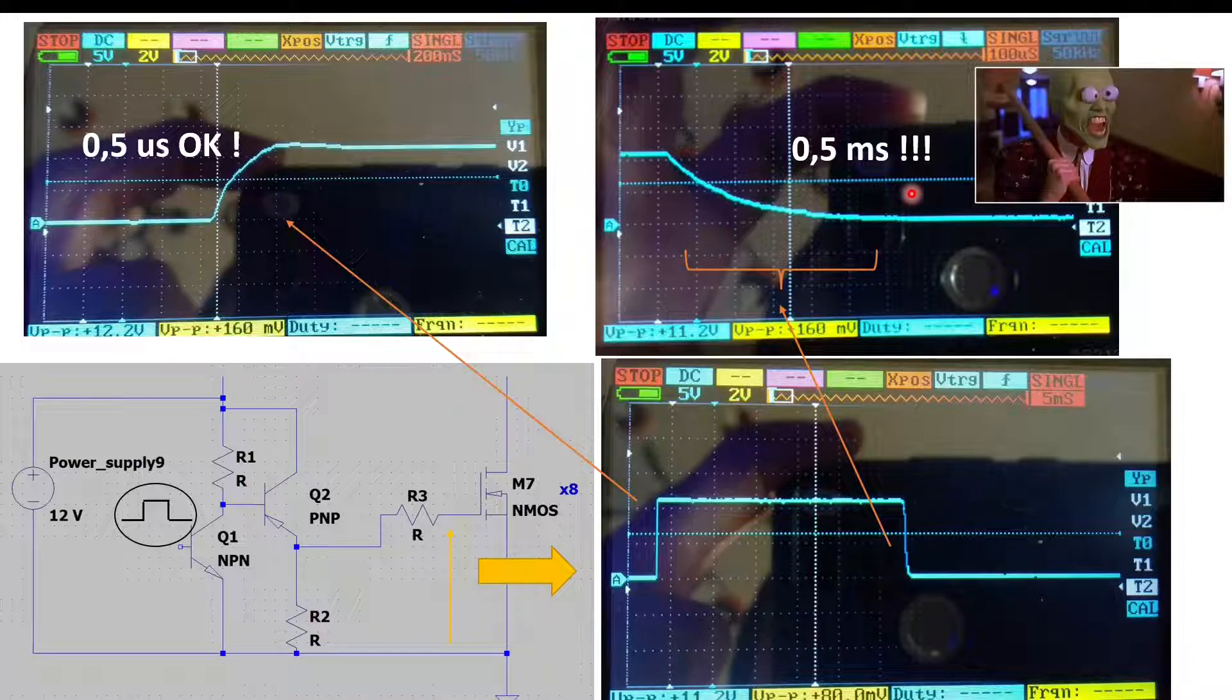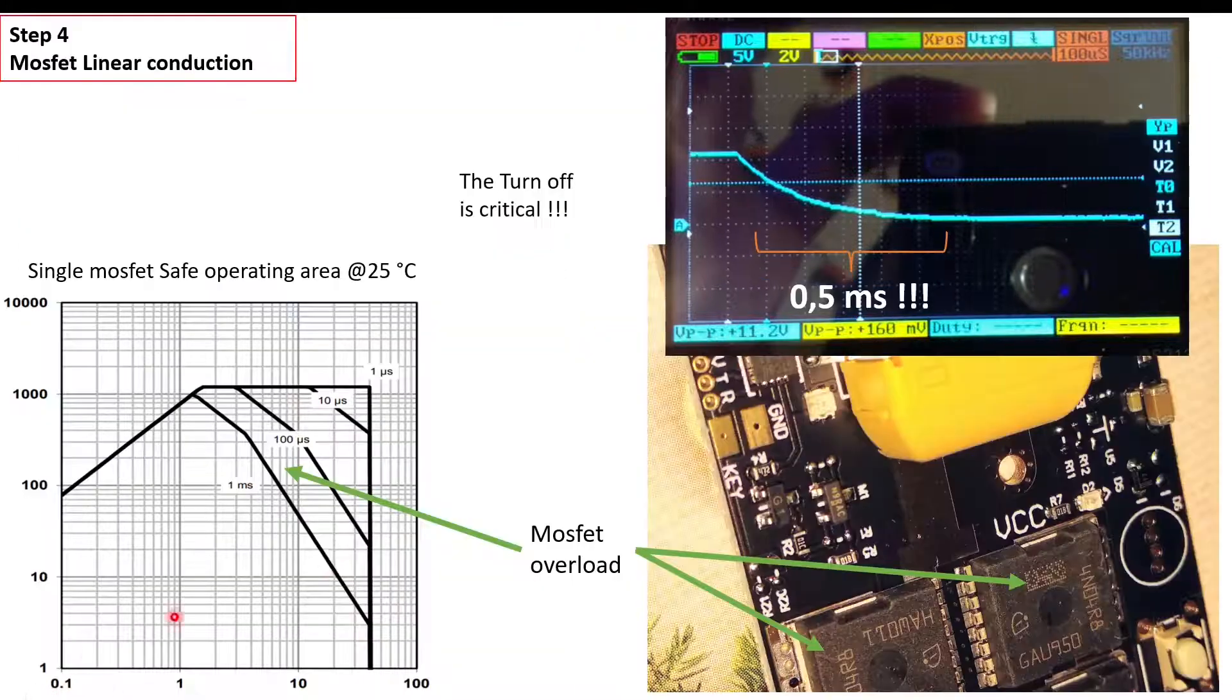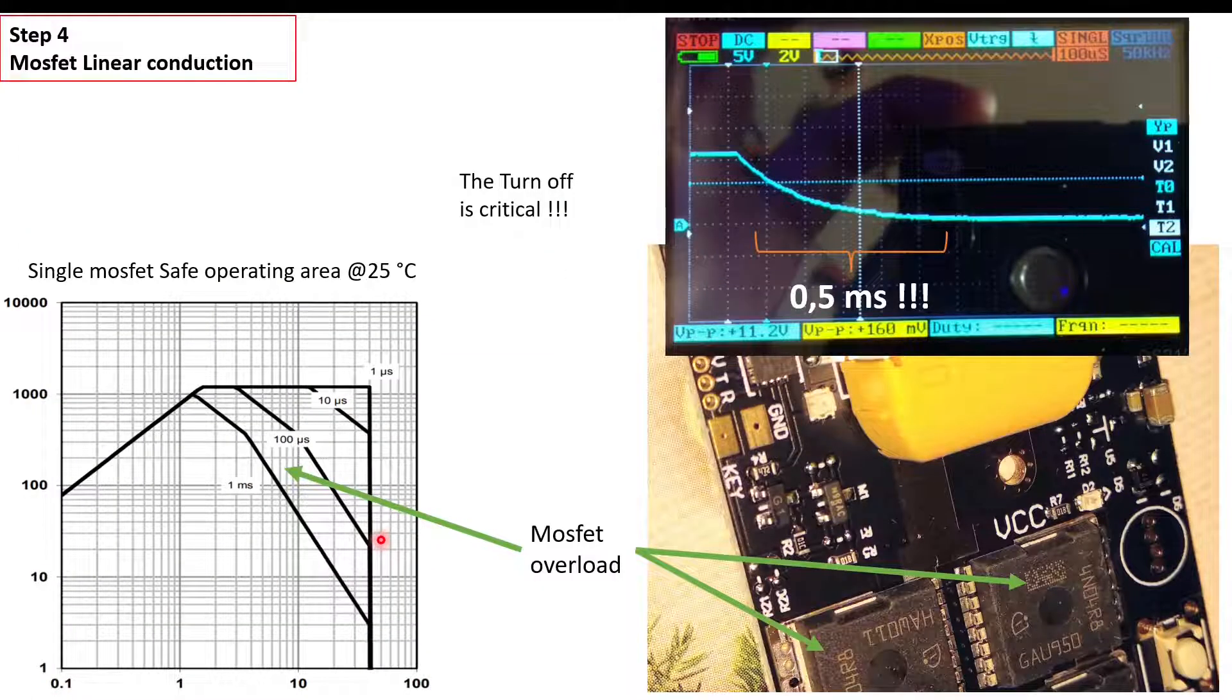In the pulse, we are around half a millisecond. This is a bit impressive because of this long time. If we go ahead, we can think during the turn-off of the MOSFETs, we work in the linear region for half a millisecond. If you see in the datasheet, the single MOSFET operating area at 25 degrees.